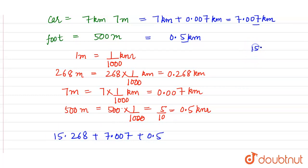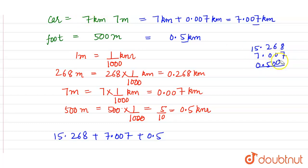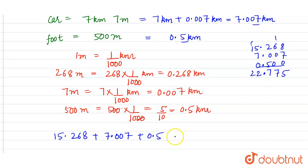Adding: 15.268 + 7.007 + 0.500. Working through the columns: 7 + 8 = 15 (carry 1), 6 + 1 = 7, 5 + 2 = 7, decimal, 7 + 5 = 12 (carry 1), giving 2. The total distance is 22.775 kilometers.